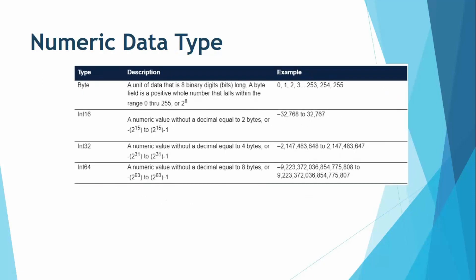Next is the numeric data type. Numeric types in Altrix contain only numbers, which can be represented by a single digit or multiple digits. The subtypes are: byte, integer, fixed decimal, float, and double. Byte and integer are whole numbers, while fixed decimal, float, and double include decimal numbers. Byte is for small numbers and integer has a larger range, as shown in the examples.